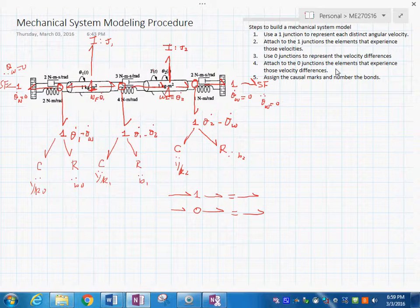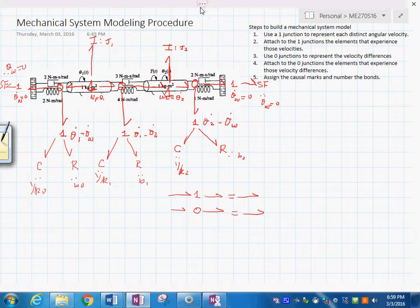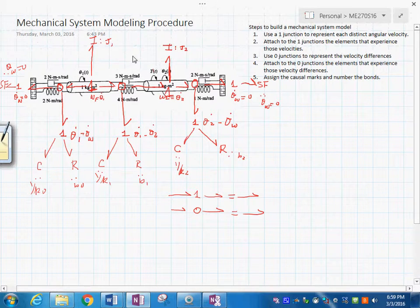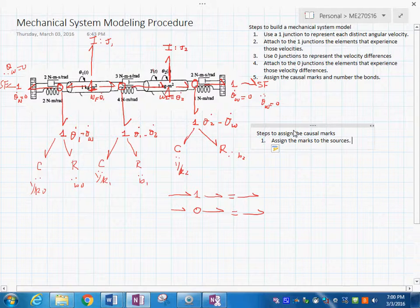It's very obvious that in here you could simplify things, and you can simplify things over here too. Because when you have a bond like this, this is equal to this. And the same thing, when you have this, this would be like that. Because the effort and the flows are the same on both sides of the junction, so it's not a problem. I would do just one last step, which would be to assign the causal marks and number the bonds to have it complete.